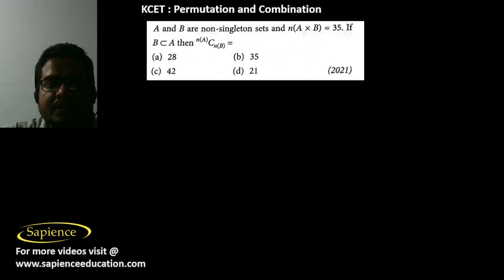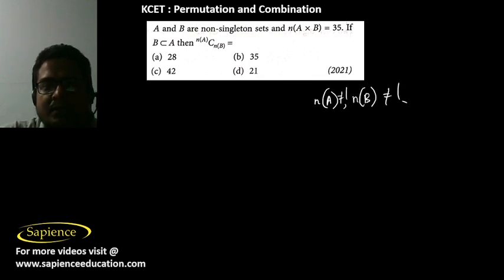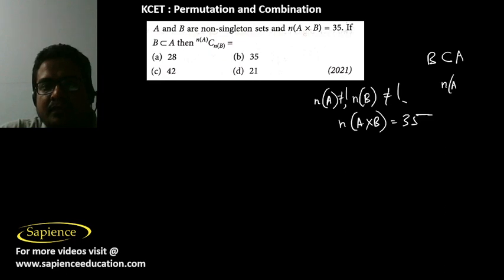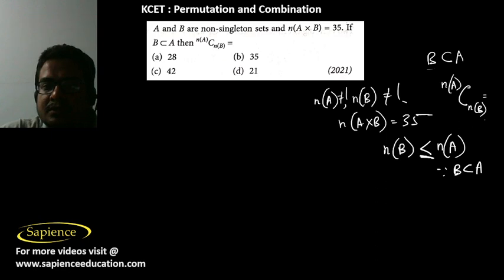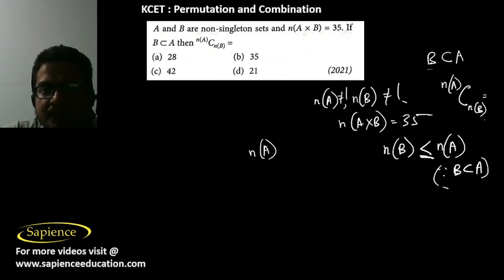Here it is told that A and B are non-singleton sets, meaning the number of elements in A and B should not equal 1. The number of elements in the Cartesian product A×B equals 35. If B is a subset of A, then n(A) choose n(B) is how much? Since B is a subset of A, the number of elements in B must be less than or equal to the number of elements in A, and n(A) × n(B) = 35.